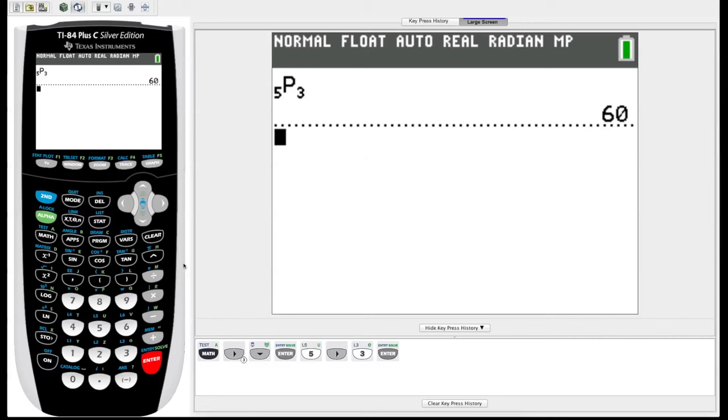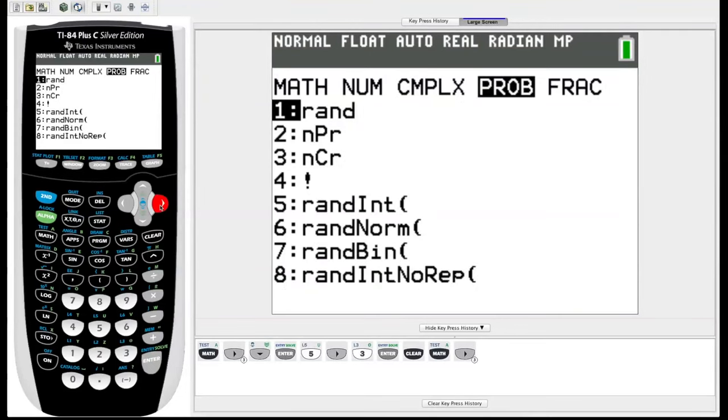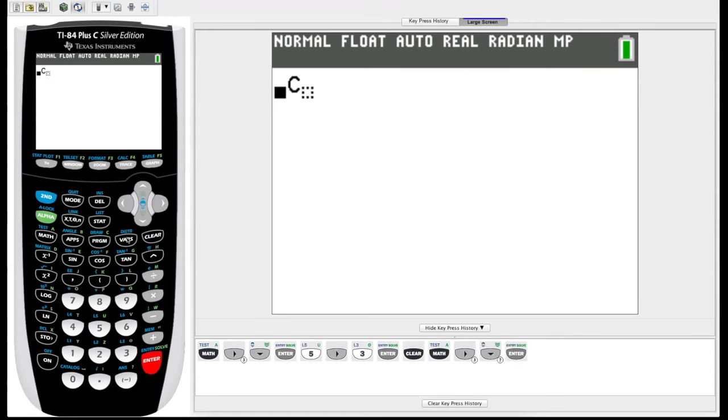Similarly if we go back to math and over to prob, there is nCr which is for combinations, which is the number of ways to choose r objects from a set of n. Again we choose our n, say five, arrow over, choose three, we hit enter. It calculates the number of ways to choose three objects from a set of five.